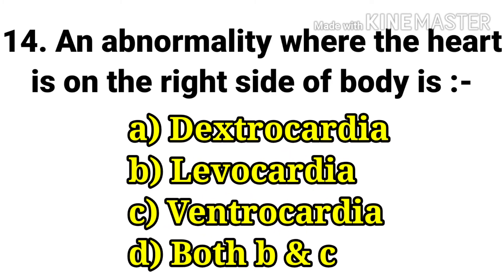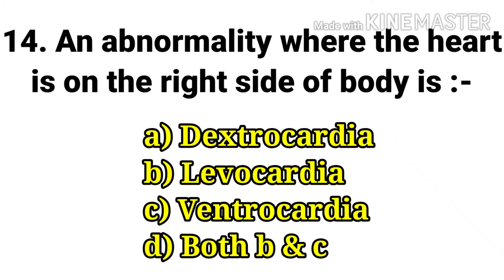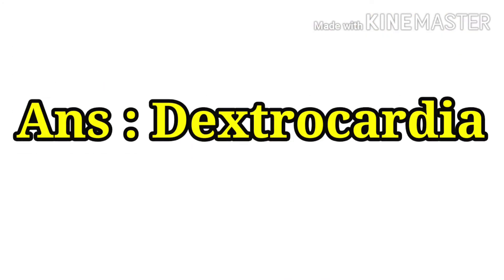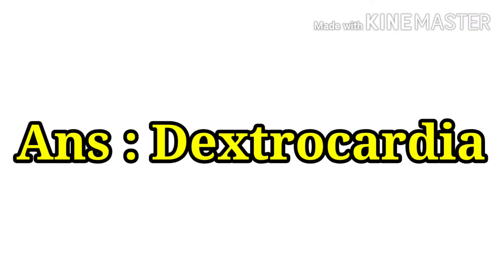The next question: an abnormality where the heart is on the right side of the body — options are dextrocardia, levocardia, ventrocardia, and both B and C. The answer is dextrocardia.